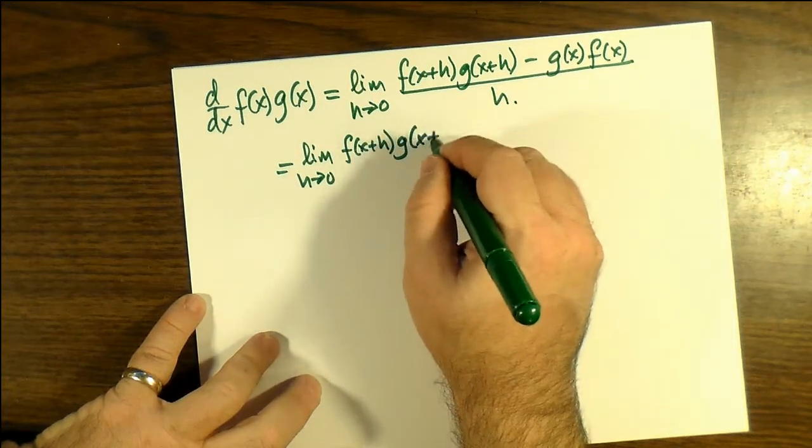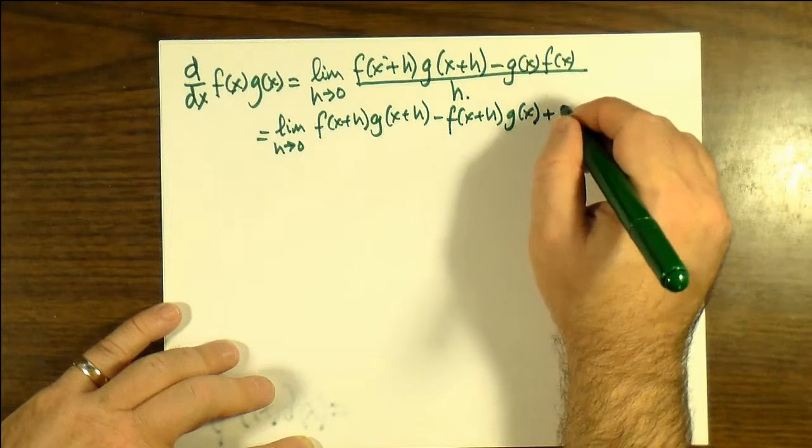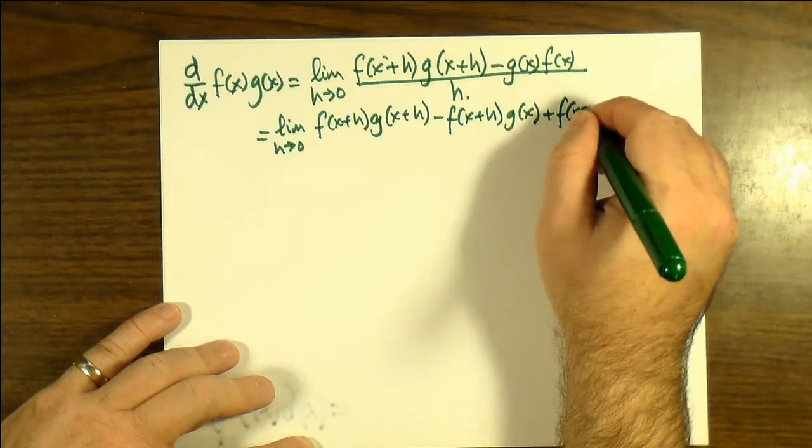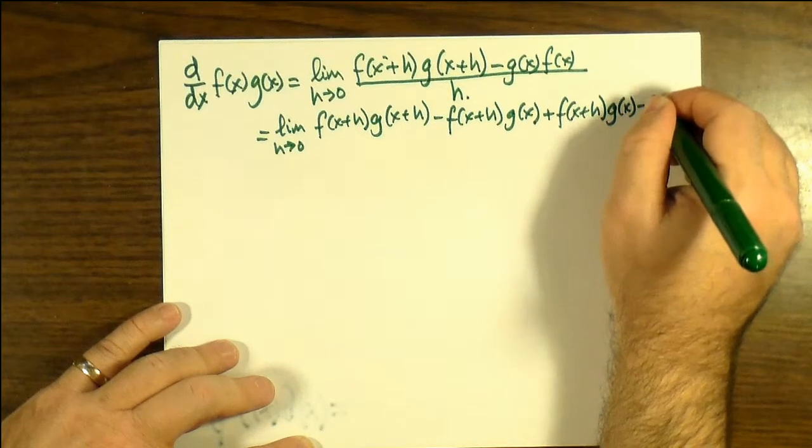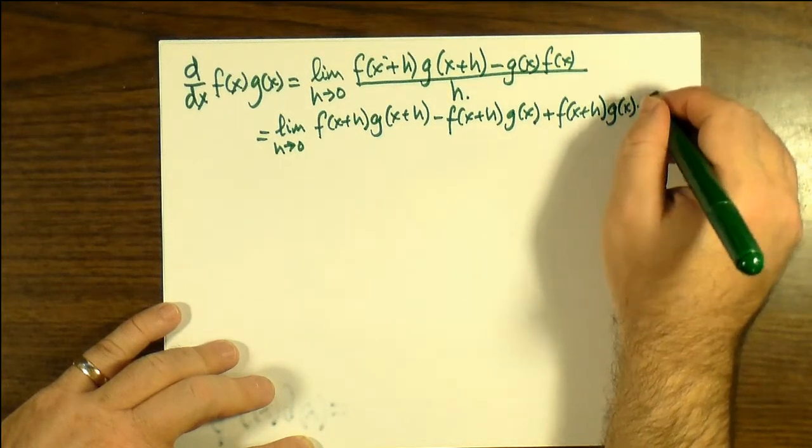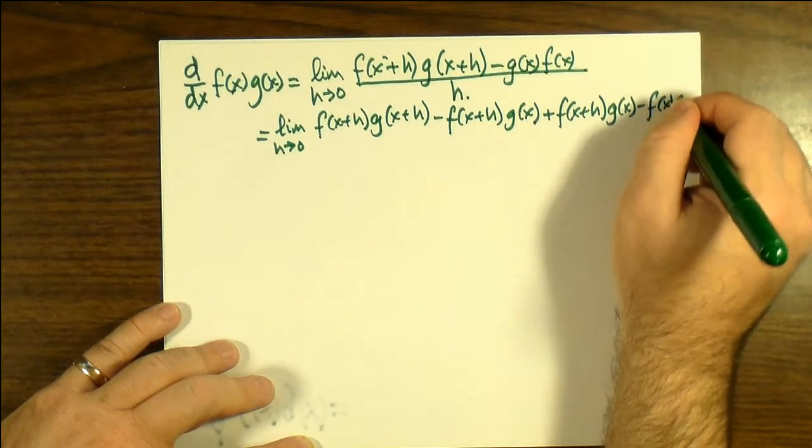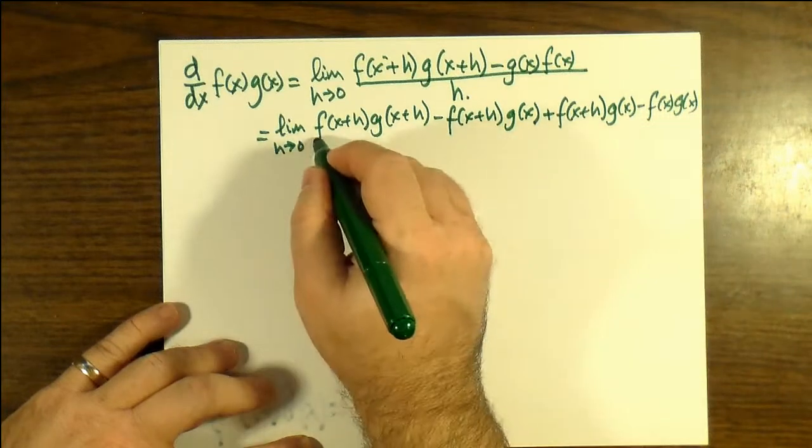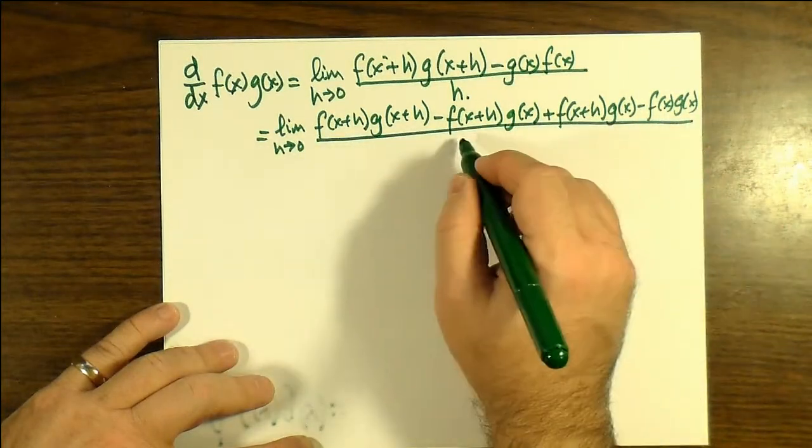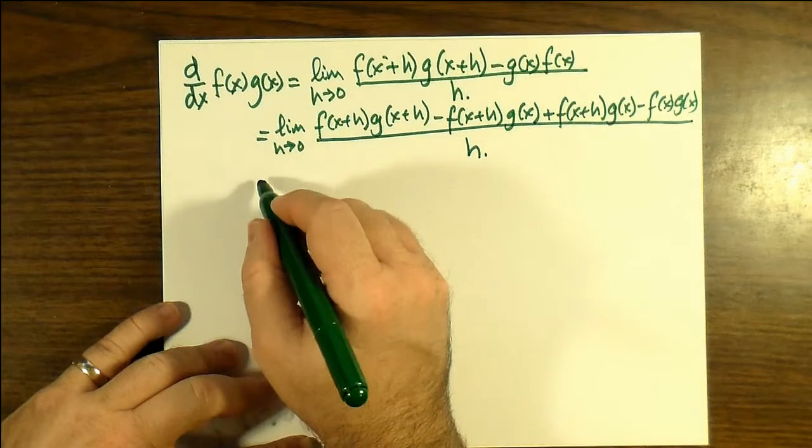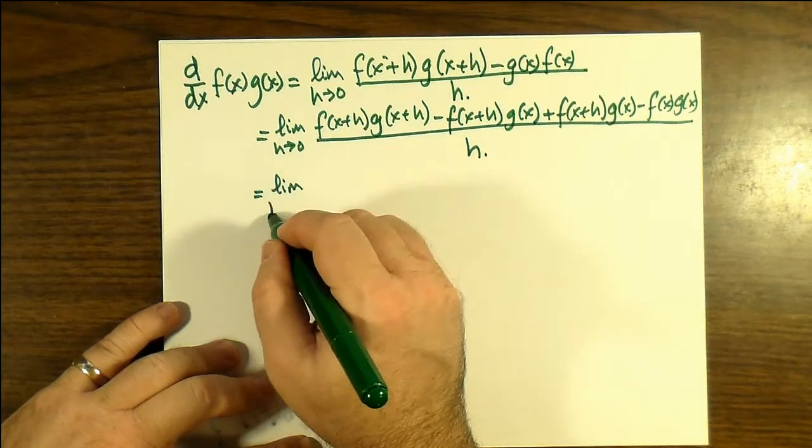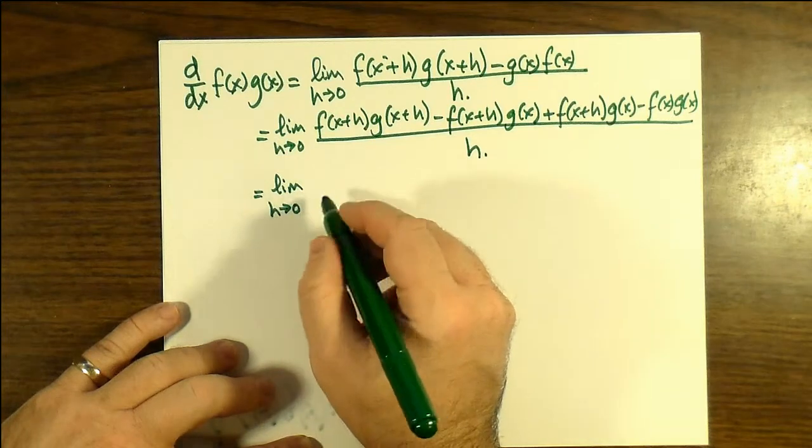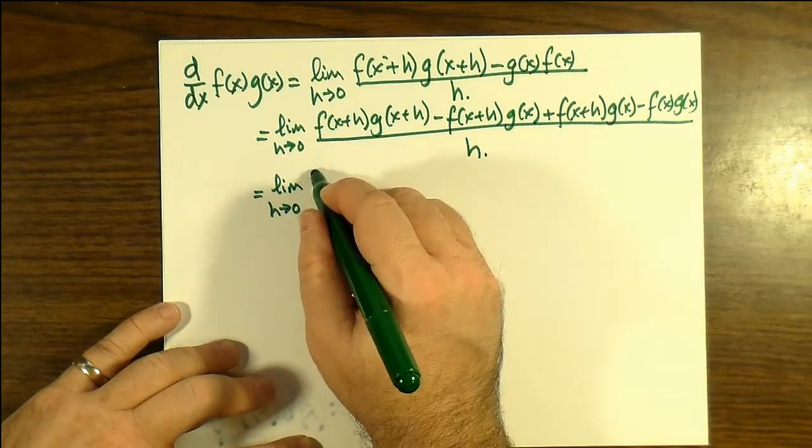We're going to take away f(x+h) times g(x) and then we're going to add it back, and this will prove useful in the next step. And of course what we're doing at the same time is we're keeping everything else the same in the equation.